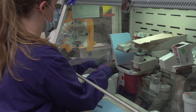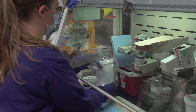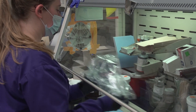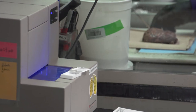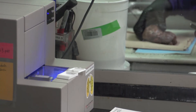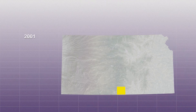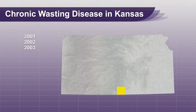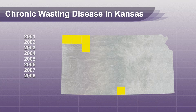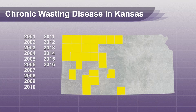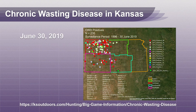Within the IHC laboratory we also have a prion section where we analyze thousands of samples from sheep, goat, and cervids like deer and elk by IHC for scrapie and chronic wasting disease. We are accredited by and work closely with our colleagues from the state and federal agencies including the United States Department of Agriculture, and provide surveillance testing for the state of Kansas during the deer hunting season.